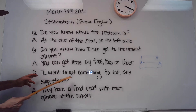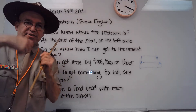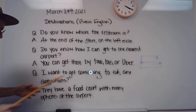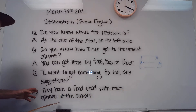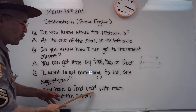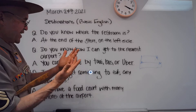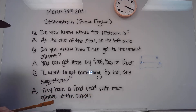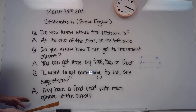Question: I want to get something to eat — any suggestions? He's asking do you know where I can find food. Answer: They have a food court with many options at the airport. A food court means a lot of restaurants — maybe 5 or 10. With many options, like you can get Chinese food, Italian, pizza, Dairy Queen, Burger King, McDonald's — a lot of options at the airport.